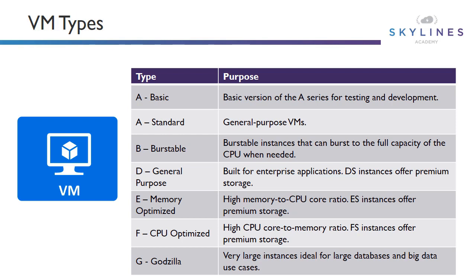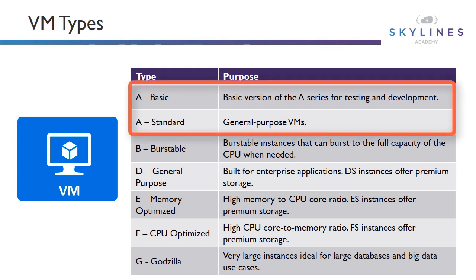Typically on-premises we would have one or maybe two different variations of hosts, and every time Intel releases a new CPU we would upgrade those hosts. But in the public cloud, because of the scale that they have, you have multiple choices available to you. It's very important to understand and select the right instance type for your workload. The A series were the very first series that Microsoft introduced, divided up into basic and standard. Standard are our general-purpose VMs, and the basic version of the A series is for testing and development.